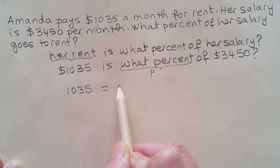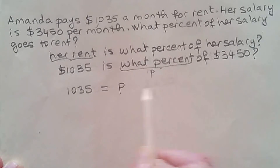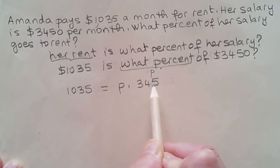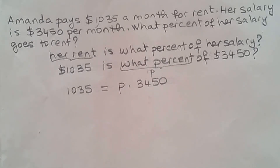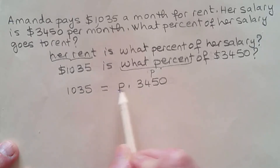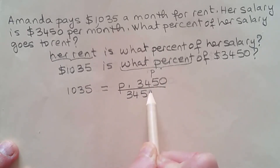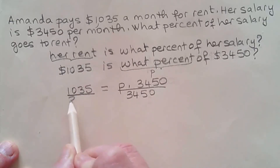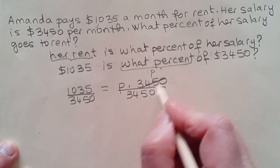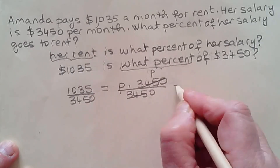Let's set up the equation: 1,035 is equal to what percent — we're calling it P — of 3,450. So now we need to solve for P. We need to divide by 3,450. This cancels and now we'll be able to solve for P.